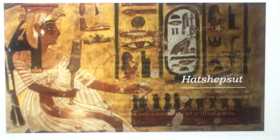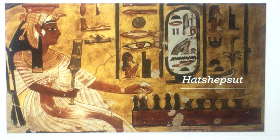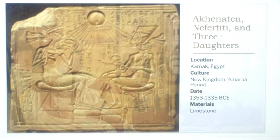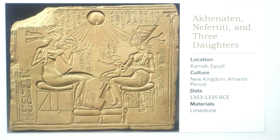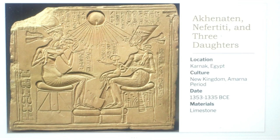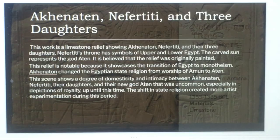Here is Hatshepsut, and this is Akhenaten, Nefertiti, and Three Daughters. The location is Karnak, New Kingdom, Amarna period, 1353 to 1335 BCE, and it's made of limestone.